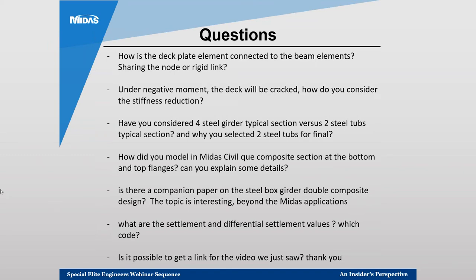Regarding stiffness reduction under negative moment where the deck is cracked: in the US and under the Australian code you can analyze the bridge as fully uncracked throughout. That was the primary approach used. The Australian code also allows cracking the deck over the piers — about 15% on each side of the pier centerline — as an alternative. Both approaches were analyzed: the 15% cracked case and the fully uncracked case.